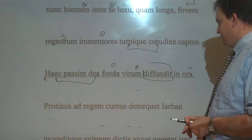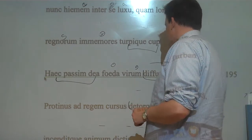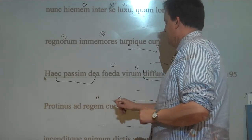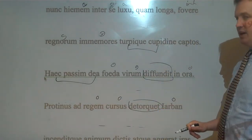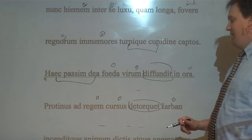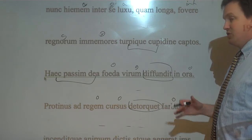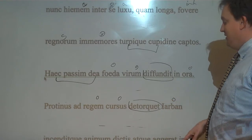And straight away she turned her course, or courses, to King Jarbas. Jarbas, of course, is a king of North Africa. So a neighbor of Dido. And we'll find out that he wanted to marry her. And she said no, I'm not going to marry him. And then now he's a little upset.